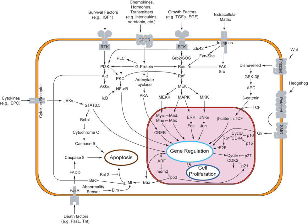Such networks are complex systems in their organization and may exhibit a number of emergent properties including bistability and ultrasensitivity. Analysis of cell signaling networks requires a combination of experimental and theoretical approaches including the development and analysis of simulations and modeling. Long-range signaling is often a significant component of cell signaling events.